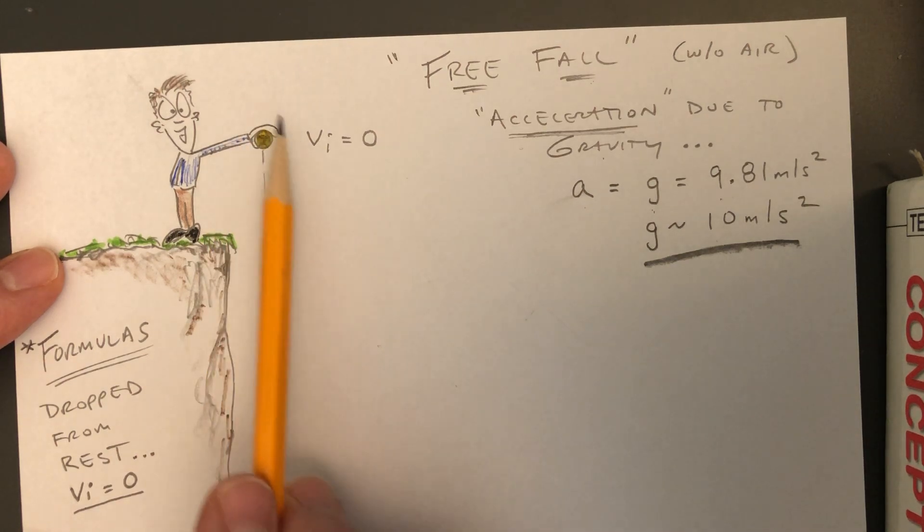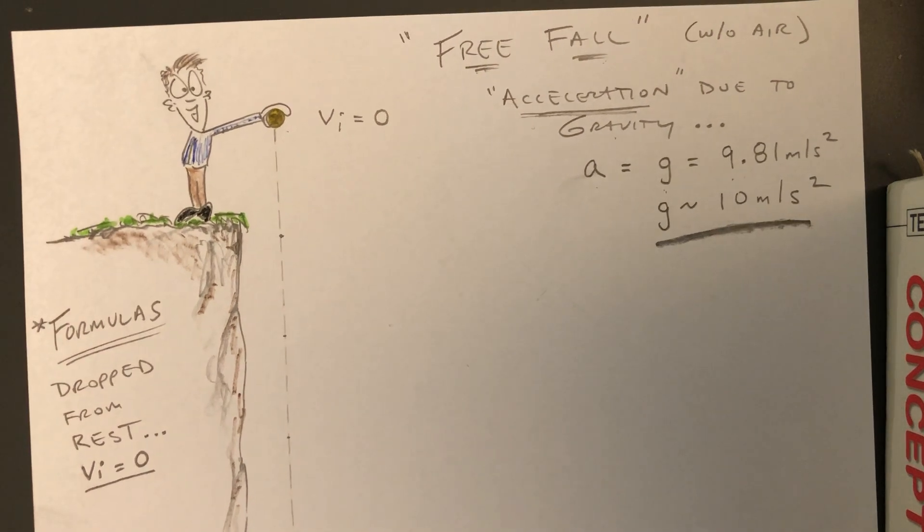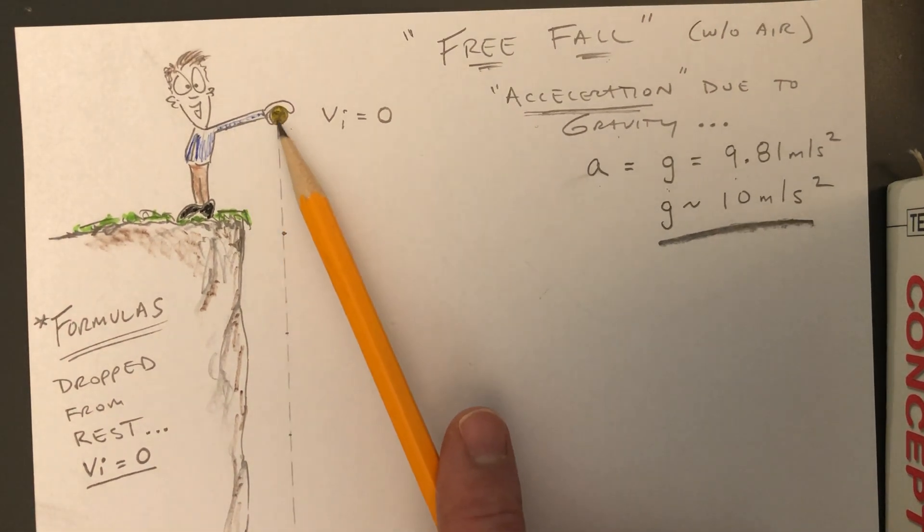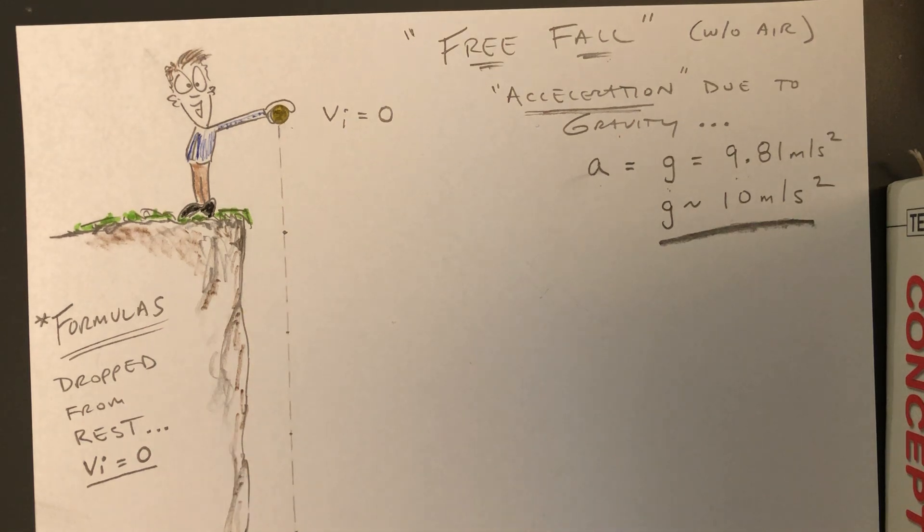That means that this object will fall to the ground and increase its rate of speed at 10 meters per second, as every second that goes by. So let's take a look at this. Let's say that you're holding an object at rest, and let's say we're videotaping it, and the moment that you let it drop, we videotaped it.